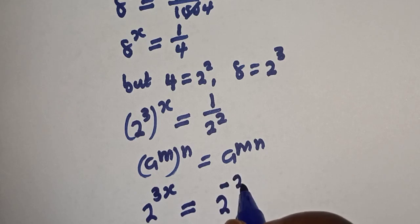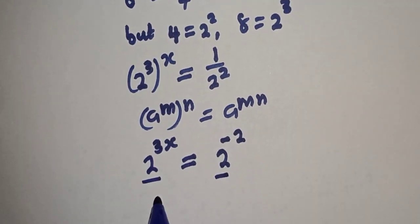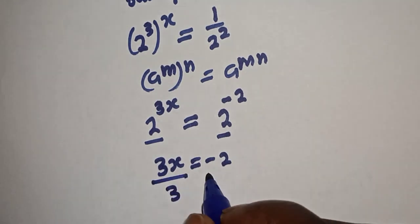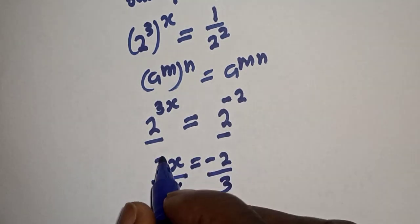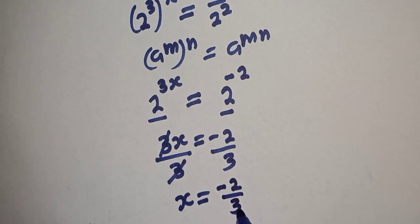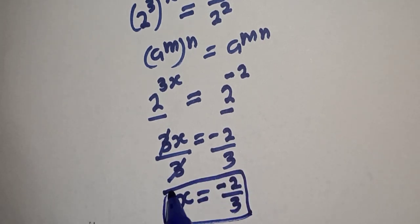We have the same base 2. So 3x is equal to minus 2. Let's divide both sides by 3, divided by 3. This will cancel. x is equal to minus 2 over 3. This is the final answer.